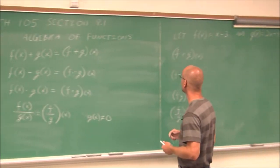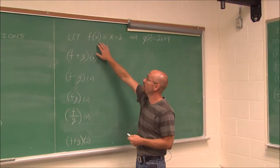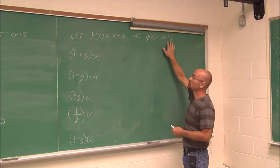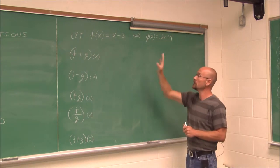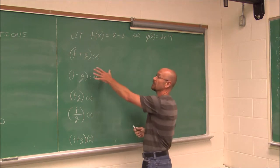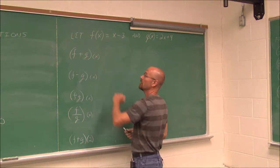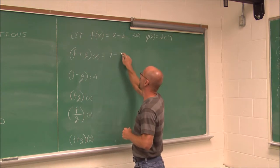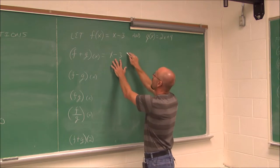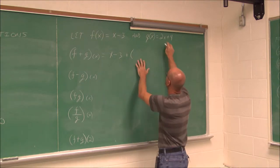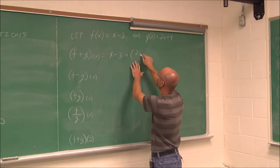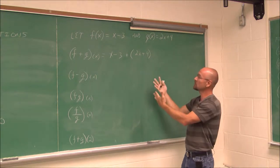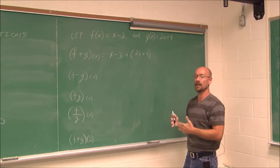Let's let f of x equal x minus 3 and g of x equal 2x plus 4. We want to add the functions, f plus g of x. To do that, I take f of x, which is x minus 3, and add g of x, which is 2x plus 4. I use parentheses when doing this substitution to avoid sign errors.